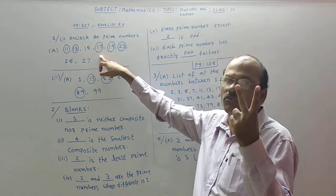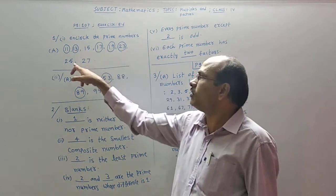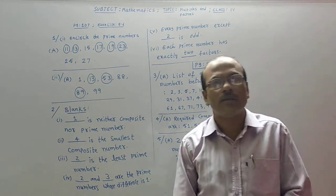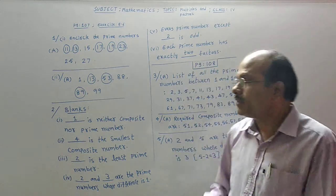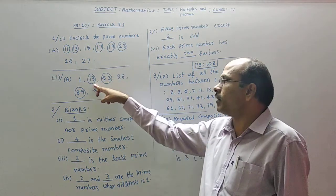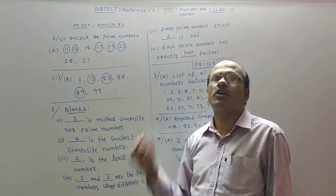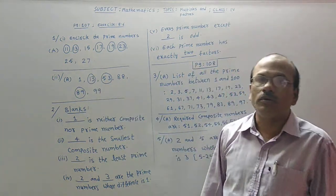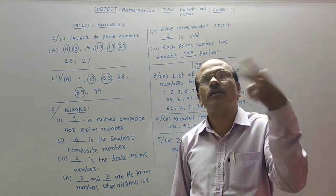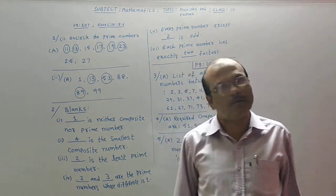17 is having 2 factors only, so it is prime. 19 and 23 — these two are not prime numbers, we have already explained why. In the second question, prime numbers are to be circled. If any number is having 2 factors, that is a prime. If any number is having more than 2 factors, it is a composite number.